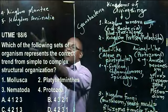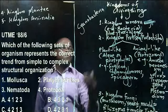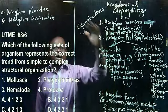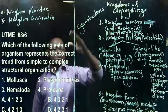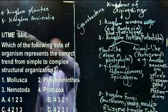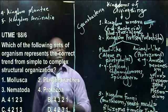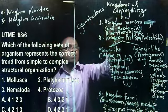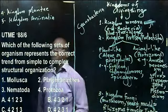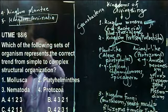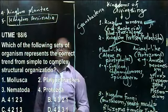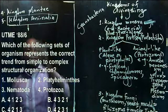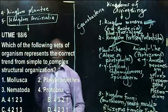Before we answer that question, we need to break down Kingdom Animalia so we can trace the evolutionary sequence. Don't forget, this kingdom follows an evolutionary order. If you are asked to list the five kingdoms in evolutionary order, you must follow this sequence, because it is believed the first group of living organisms that ever existed were bacteria — the monerans.